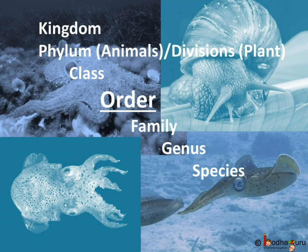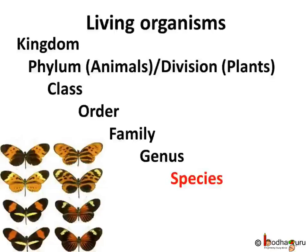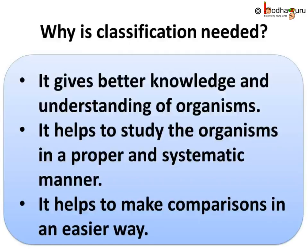A species includes all organisms that are similar enough to breed and perpetuate. If we go one or two levels up in this hierarchy, we will still have proper categorization which does justice to the diversity of organisms, yet links them properly to bring them under the same group.